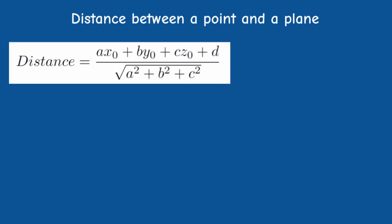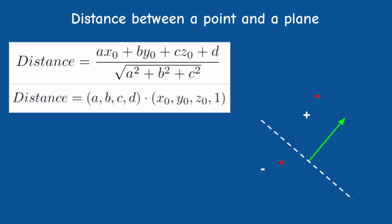The general form of the signed distance between a point and the plane is given by the following expression. Signed distance here means that if the distance is positive, the point is on the side pointed to by the normal; if it's negative, it's on the other side. When the normal vector is a unit vector, we can ignore the denominator and get a simple dot product between the vector (a, b, c, d) and the homogeneous coordinate of the point (x, y, z, w) where w equals 1.